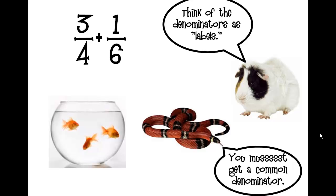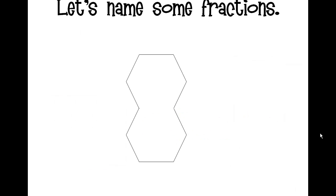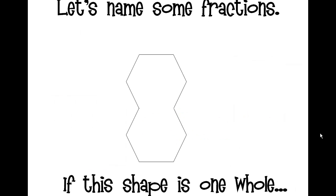Before we go into why that is, we're going to play around with some pattern blocks and name some fractions. So let's say that this funny little snowman shape is one whole. If I cover it with yellow pattern blocks, then each of those pattern blocks is one-half.